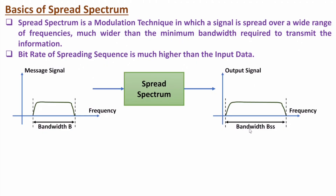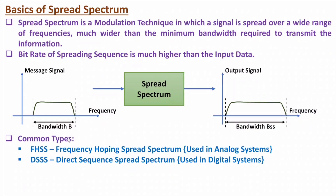Regarding types of spread spectrum, there are generally two categories. The first is for analog systems — FHSS, Frequency Hopping Spread Spectrum. The second is DSSS, Direct Sequence Spread Spectrum, which we use in digital systems. I'll make separate videos on FHSS and DSSS in this video lecture series.